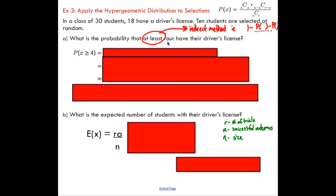The indirect method is definitely useful here. We want to look at the probability that we have at least four, so that's four or greater. We're going to use the indirect method, and that's going to tell us to take one and subtract the probability of getting zero students with their license.